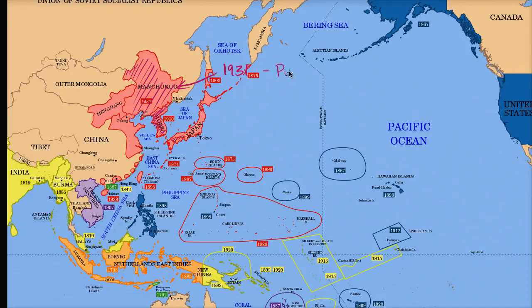When we call something a puppet state, it means there is a government there that kind of pretends to be in charge, but they're really controlled like a puppet by someone else — in this case, the Empire of Japan.